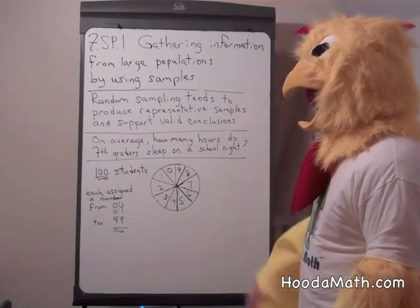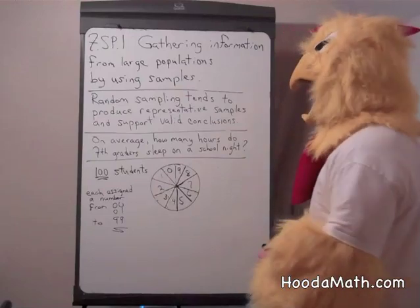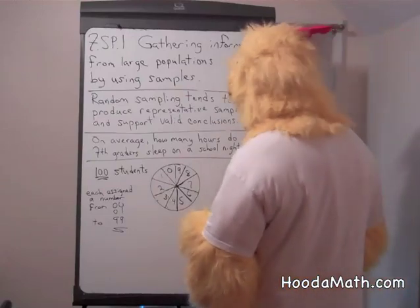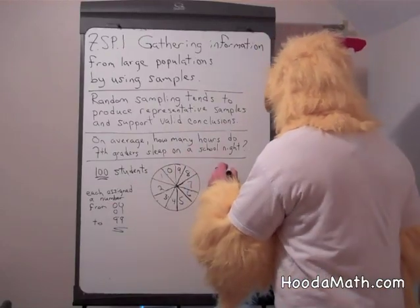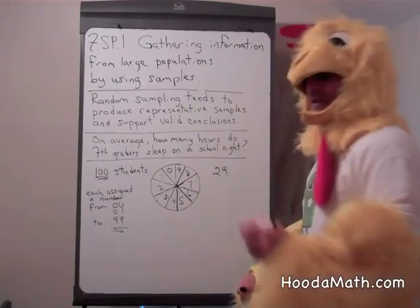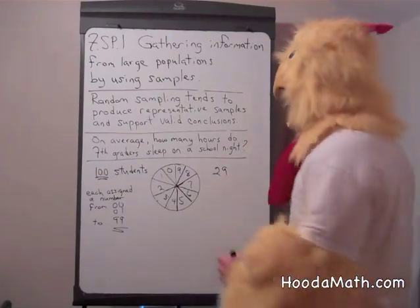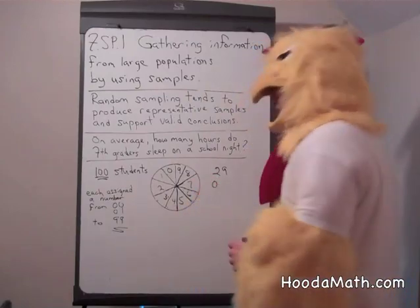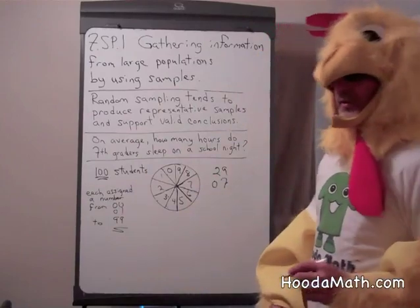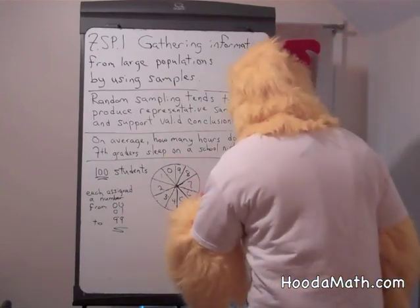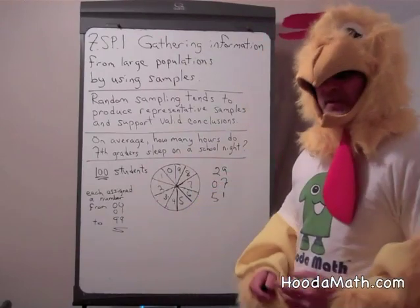Get a spinner. We spin the spinner once, which gives us the first digit. Let's say the first digit was 2. Spin it again, and the second digit, for example, was 9. That would be our first random student. We would continue — spin and maybe get 0, spin again and get 7, spin a third time and get 5, spin again and get 1, and so on, until we get 10 students.